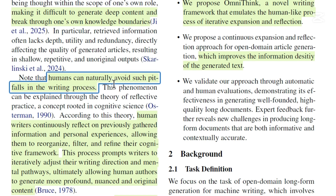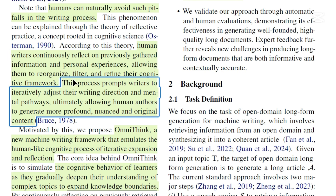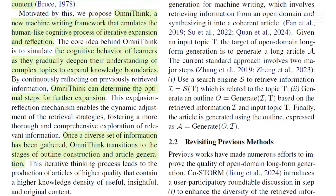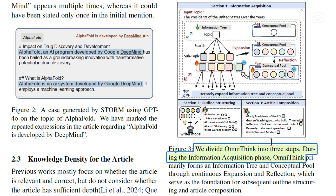Humans, by contrast, are naturally good at avoiding pitfalls in the writing process. Human writers continuously reflect on previously gathered information and personal experience, allowing them to reorganize, filter, and refine through their cognitive framework. This process prompts writers to iteratively adjust their writing direction and mental pathways, ultimately allowing human authors to generate more profound, nuanced, and original content — and this is what OmniThink is trying to copy from humans.